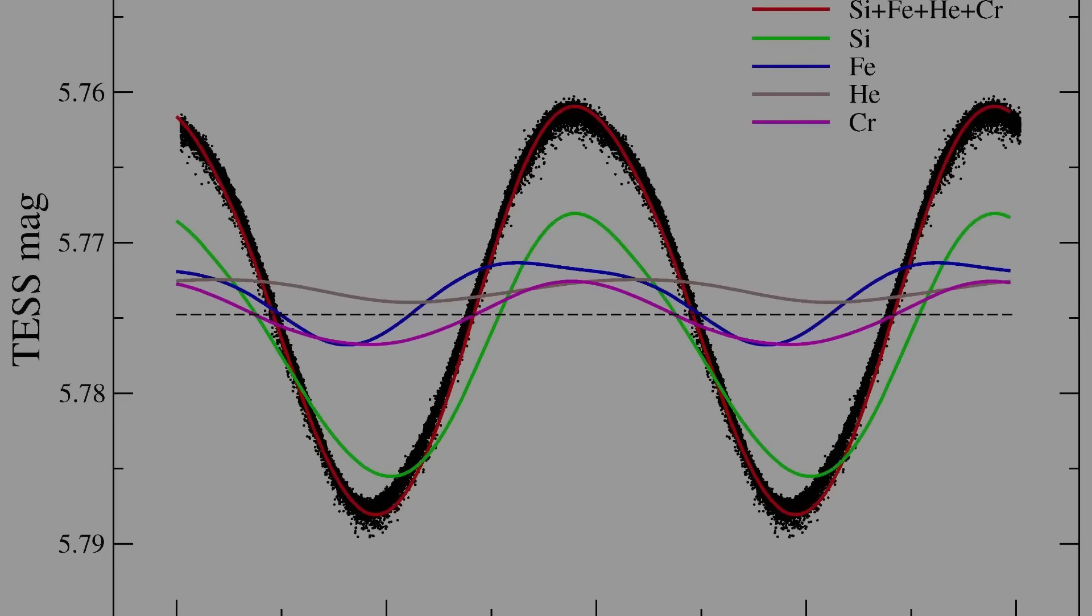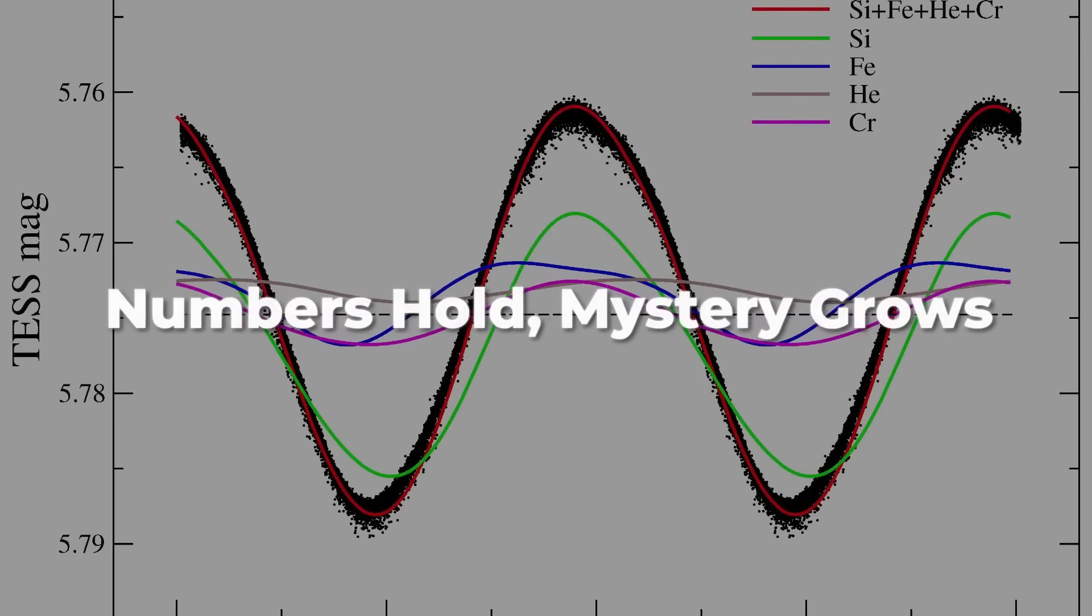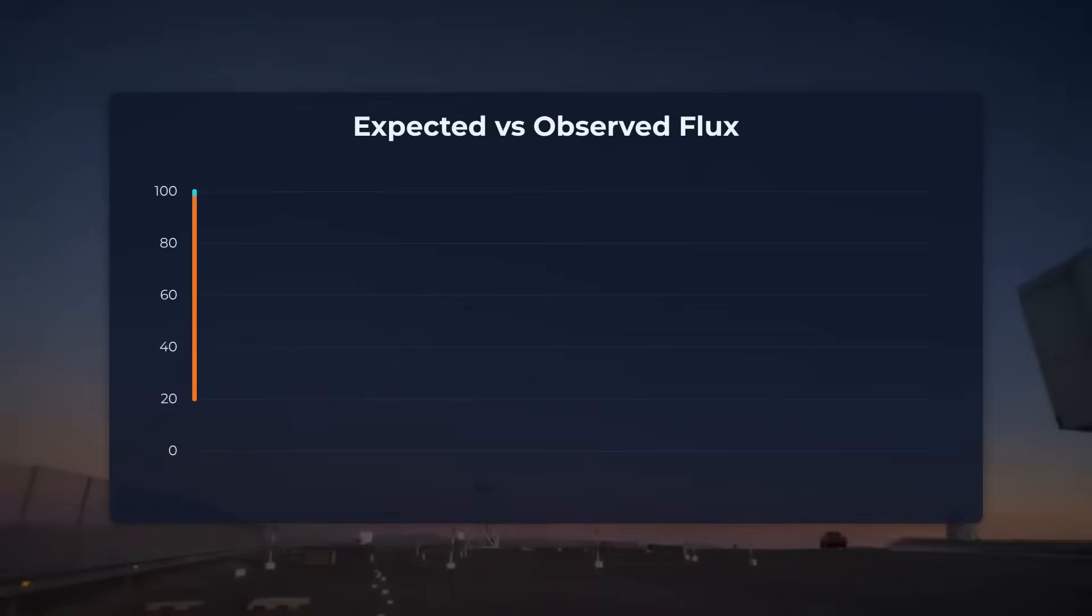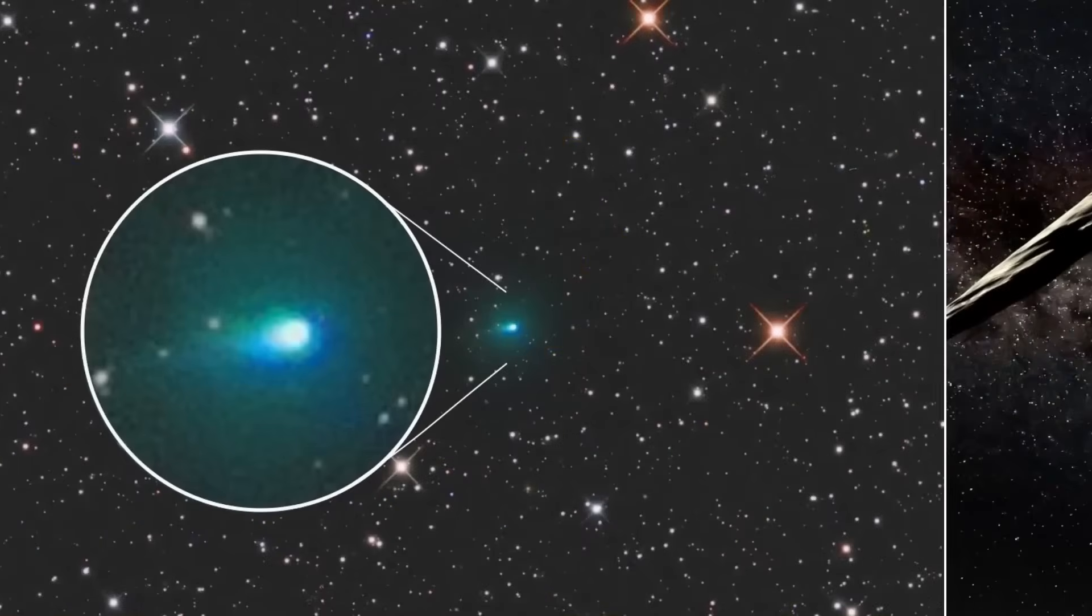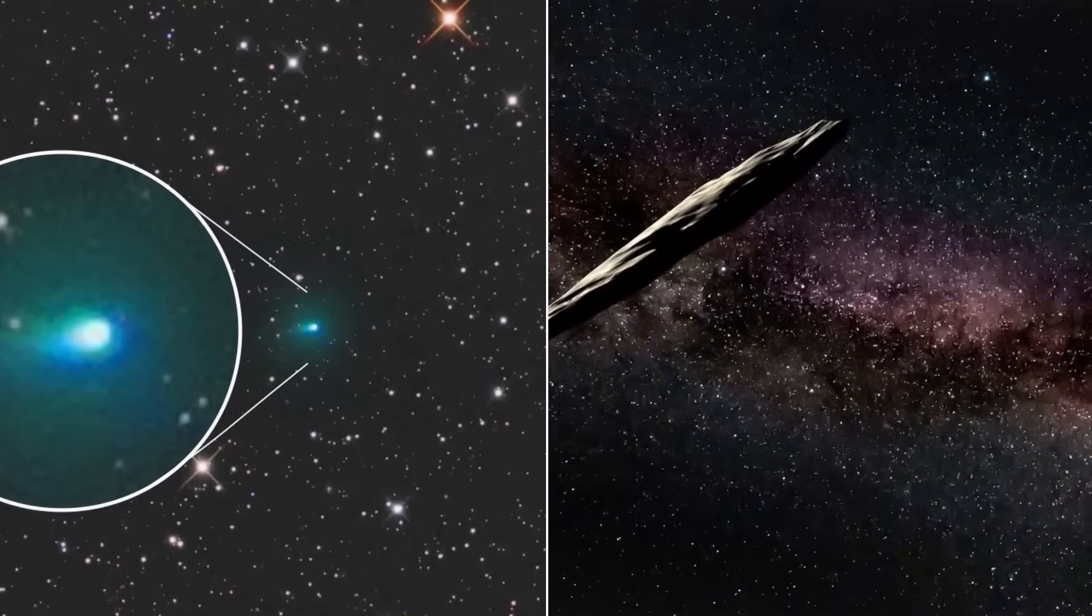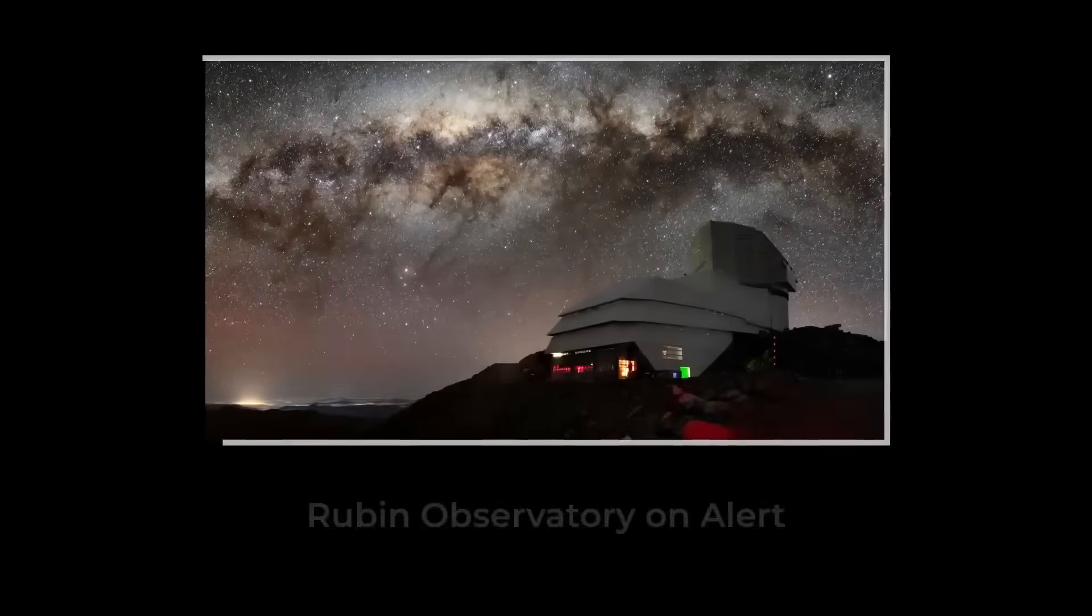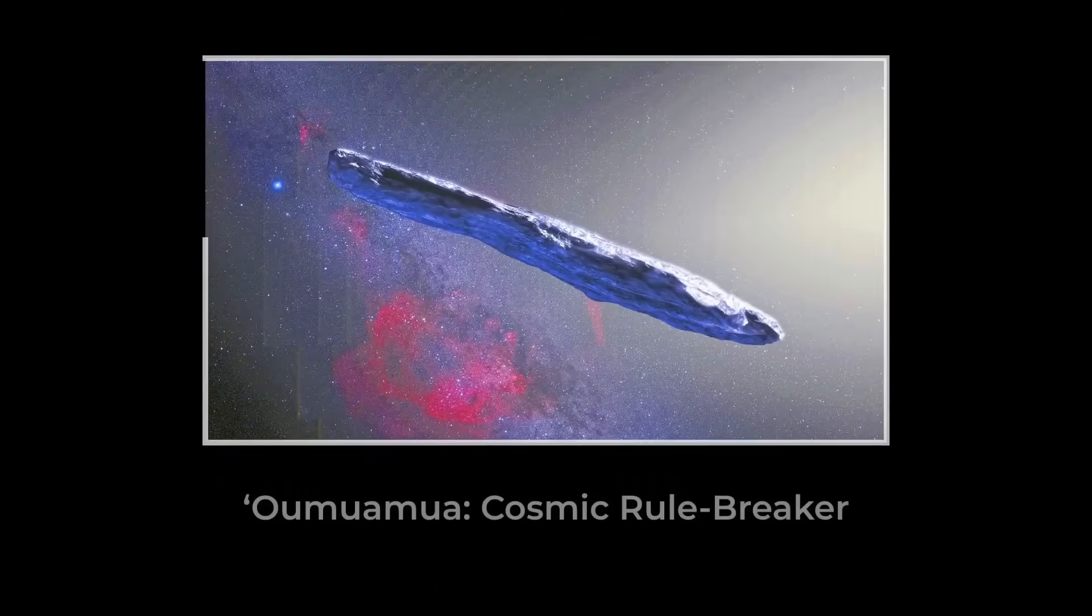A second possibility comes from the unusual nickel-rich spectrum. Instead of a natural imbalance, could this reflect engineered alloys, materials refined for strength, durability, or even spacecraft construction slowly eroding into space? The hypothesis is not without precedent. When Oumuamua passed through in 2017, some researchers proposed it might be an artificial light sail, thin and controlled by sunlight.